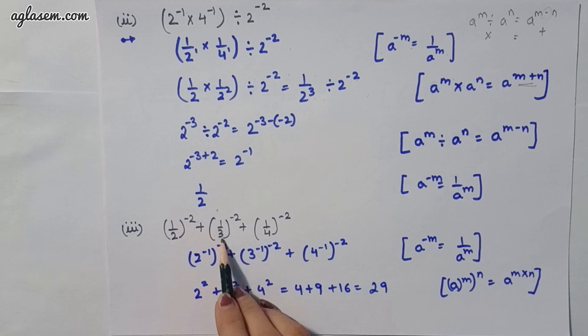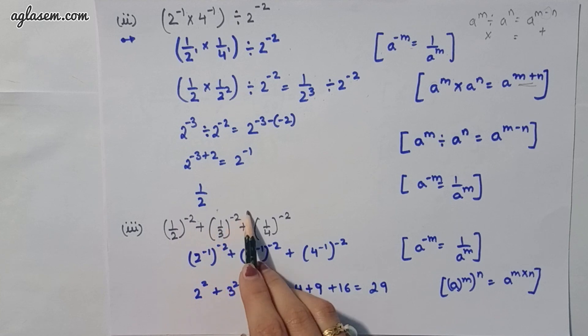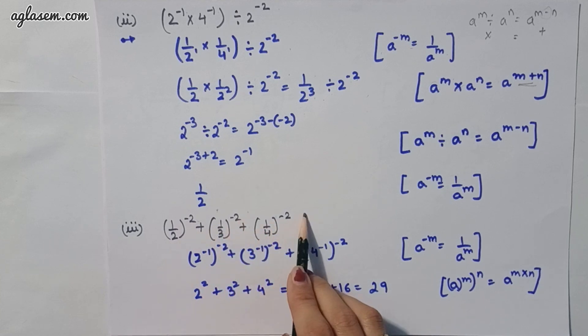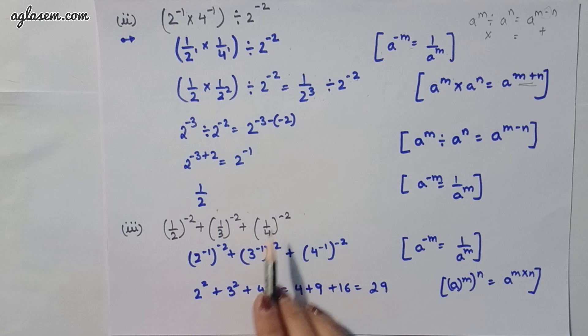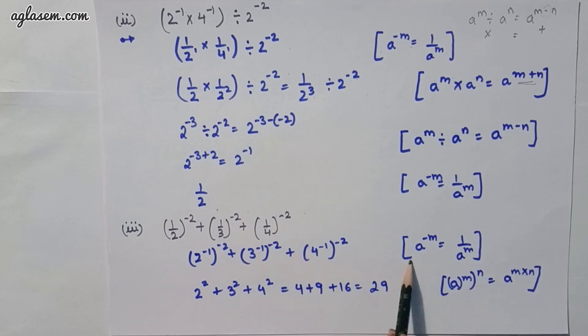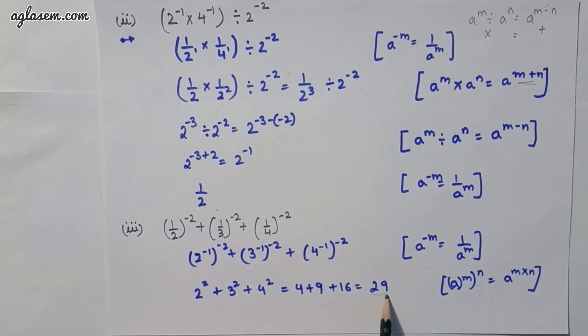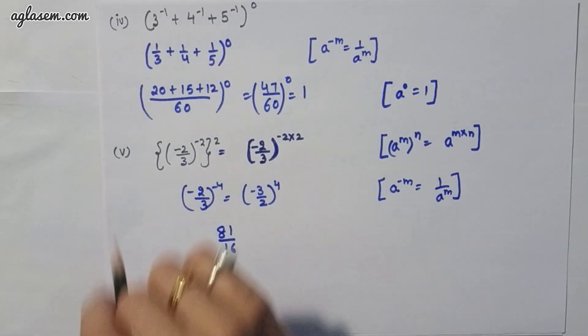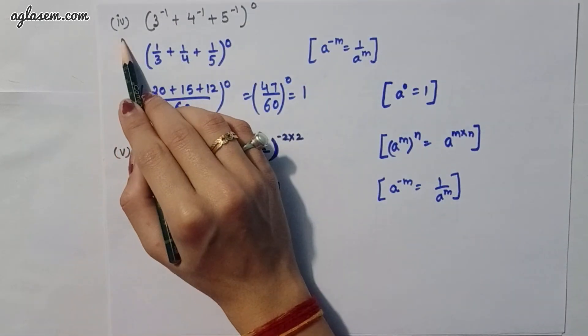Moving to the third part: (1/2)^2 + (1/3)^(-2) + (1/4)^(-2). Applying the same formula, the answer is 29.